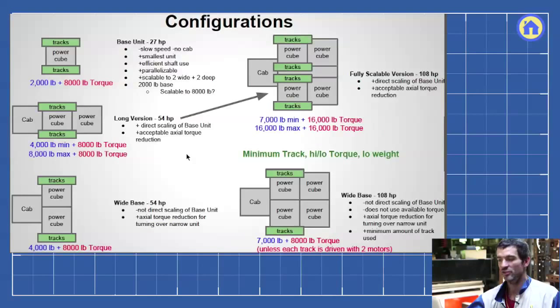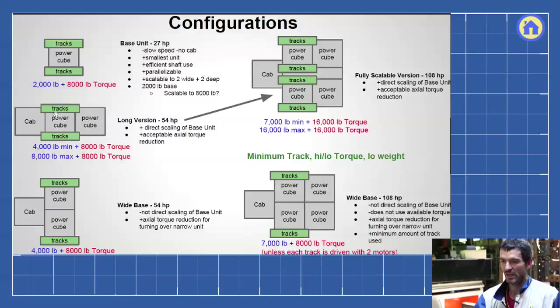These are the different configurations that we've considered and we've settled on one that is essentially two power cubes side by side and then a third one behind. So two individual micro tracks, not the wider track module like you see here. We've explored these different options.